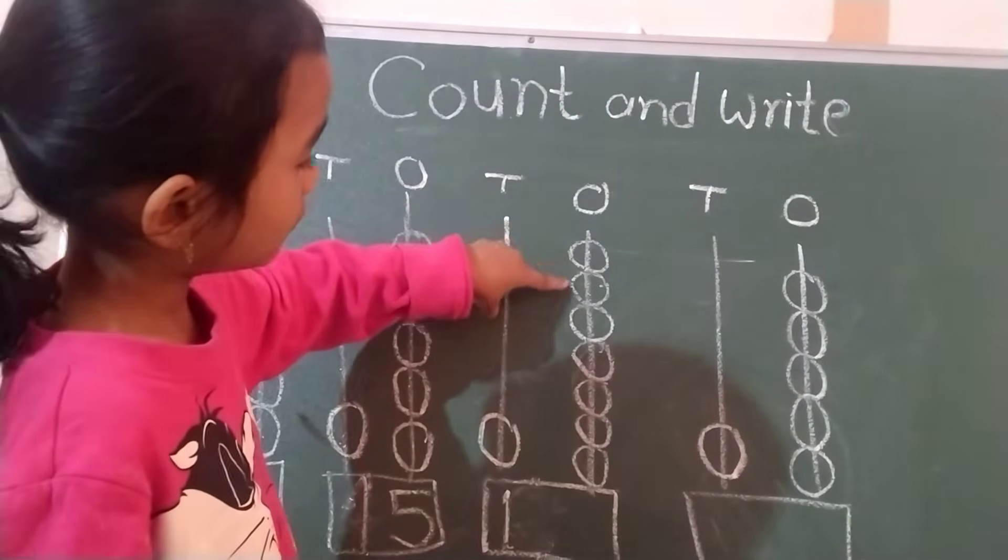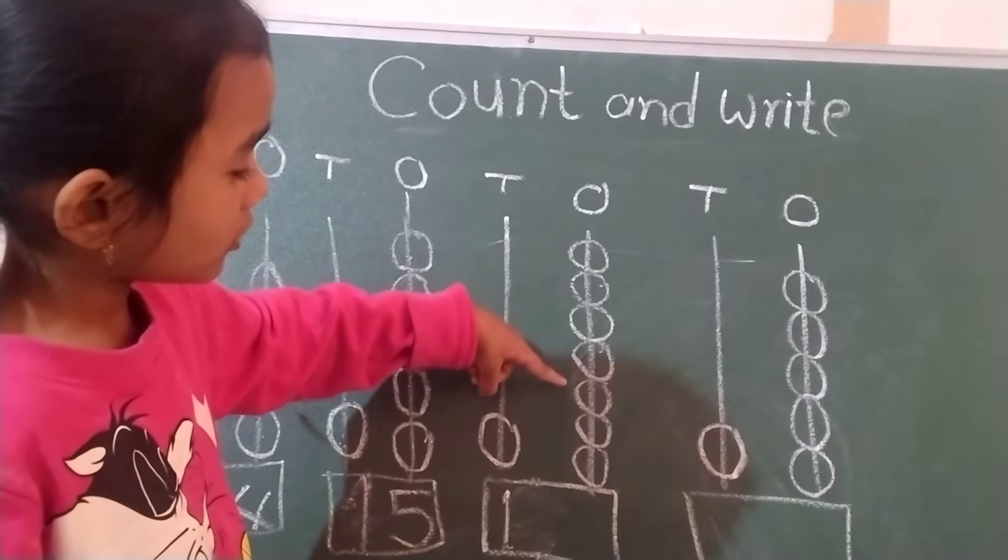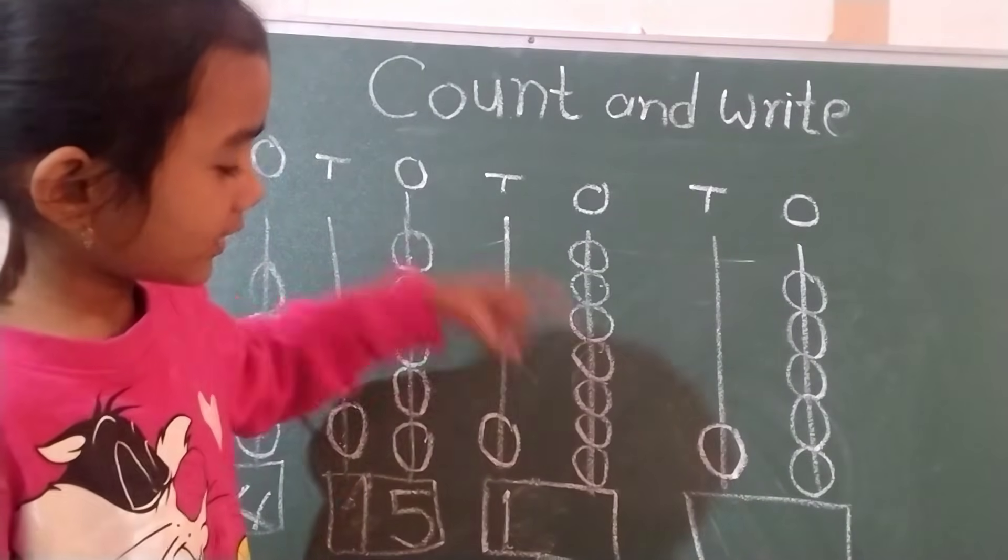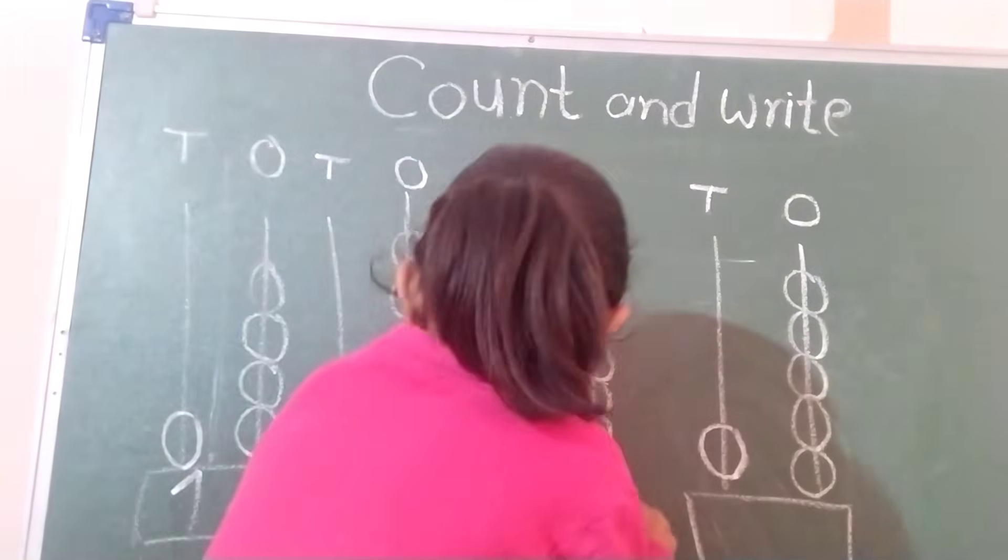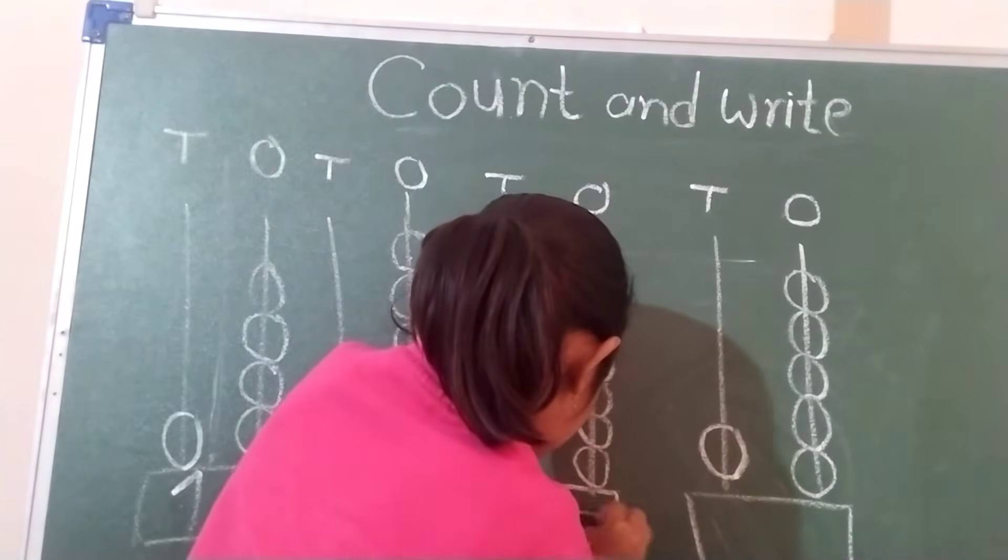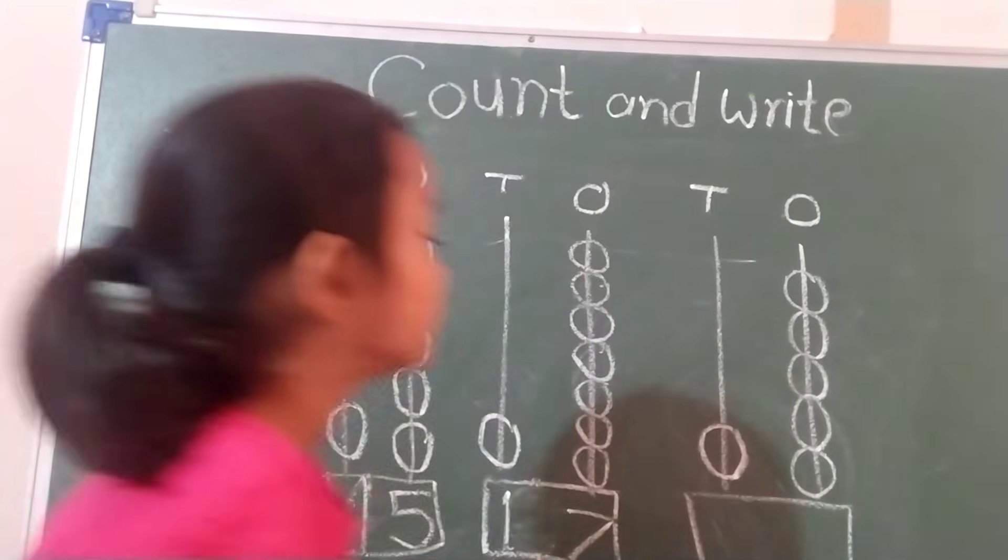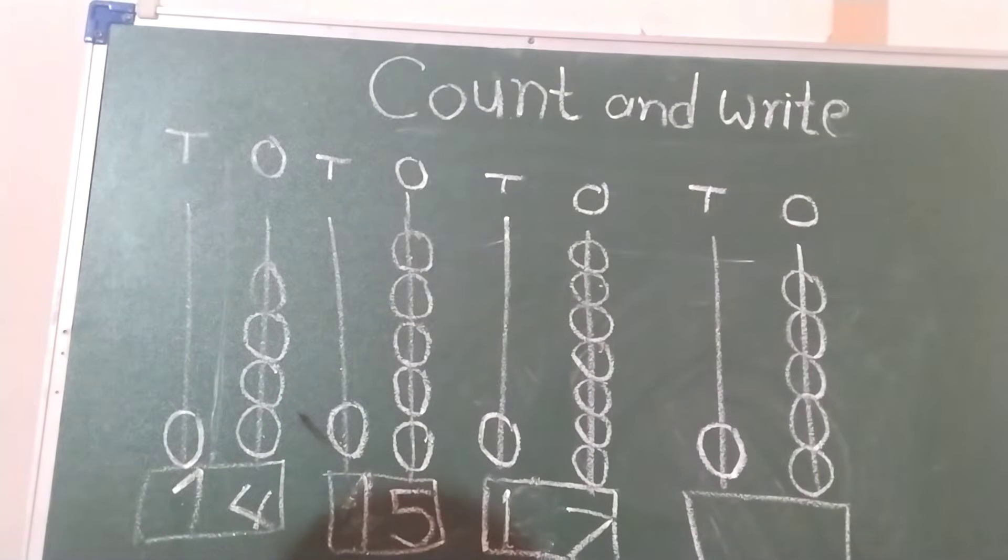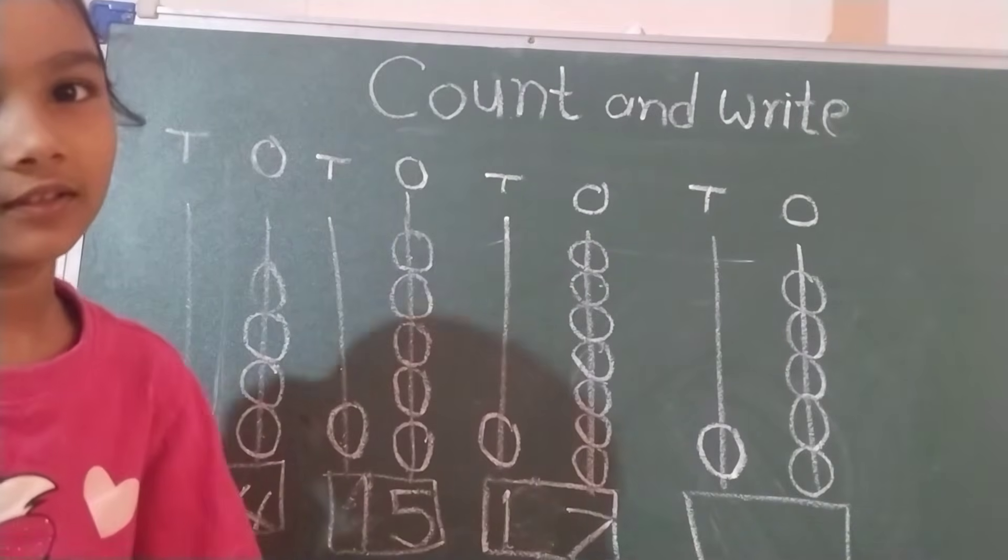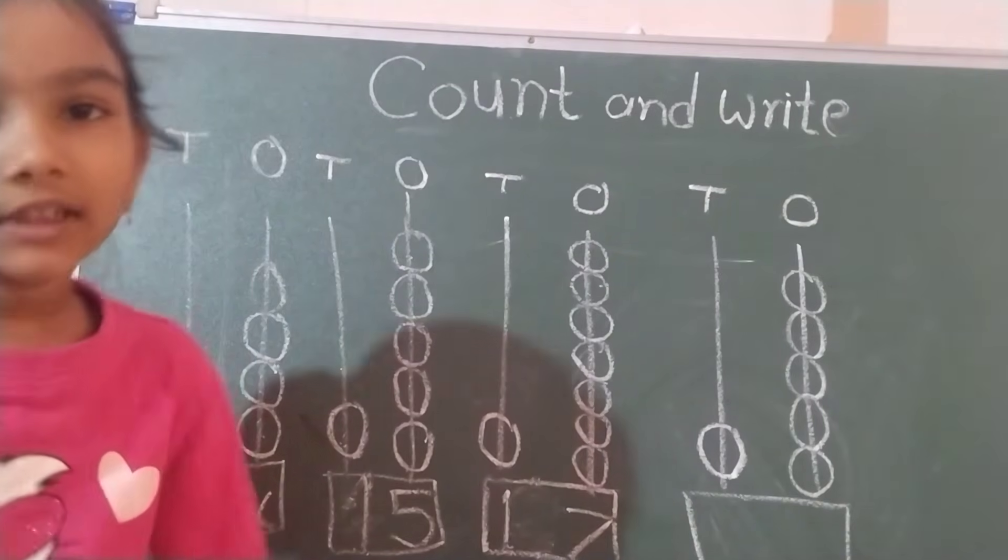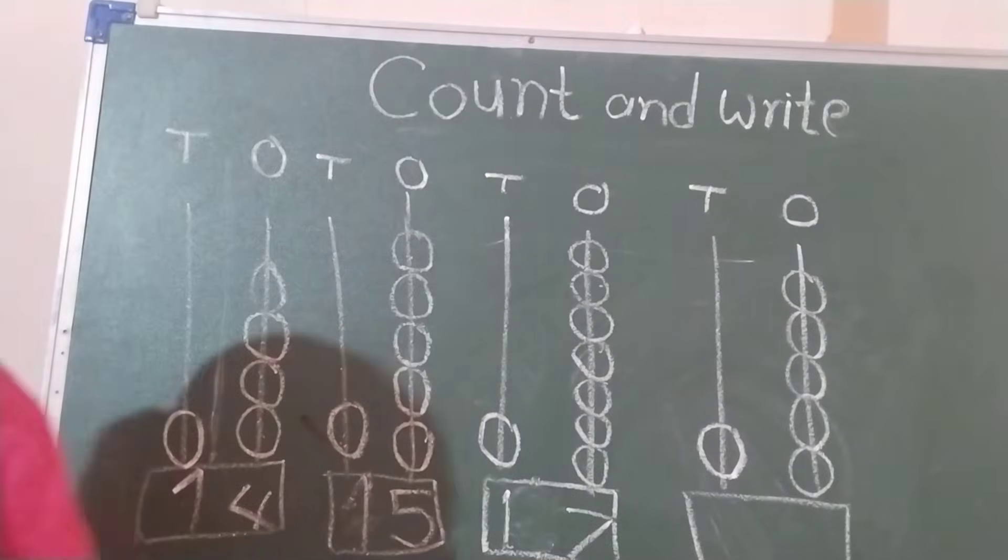One, two, three, four, five, six, seven. Say seventeen. Which number you got? One, seven. One, seven, seventeen. Say loudly. One, seven, seventeen.